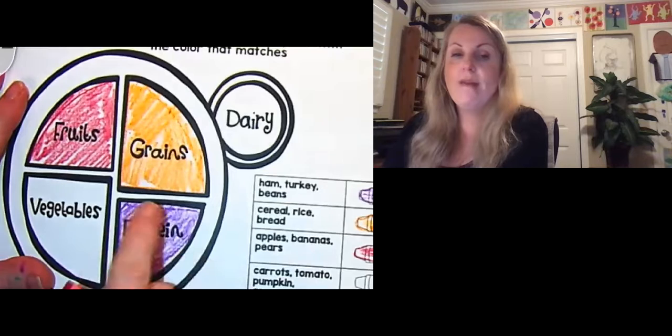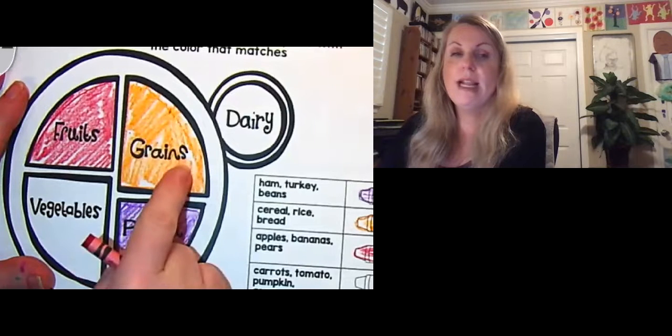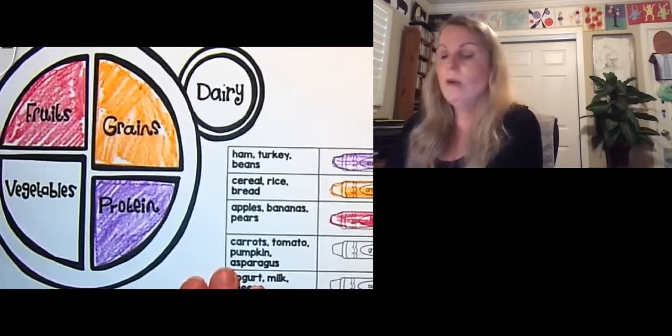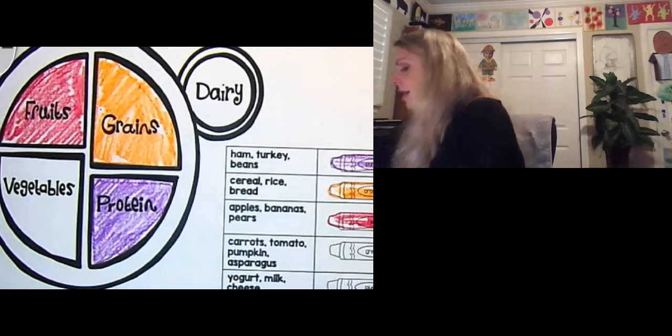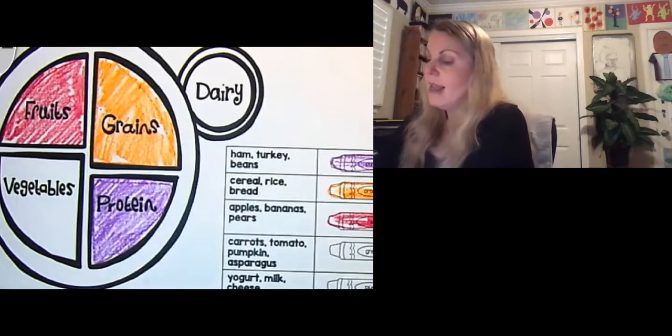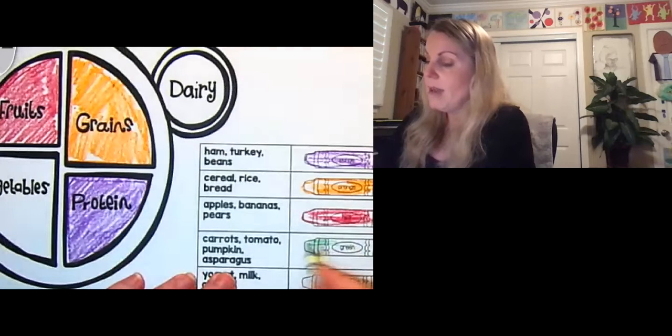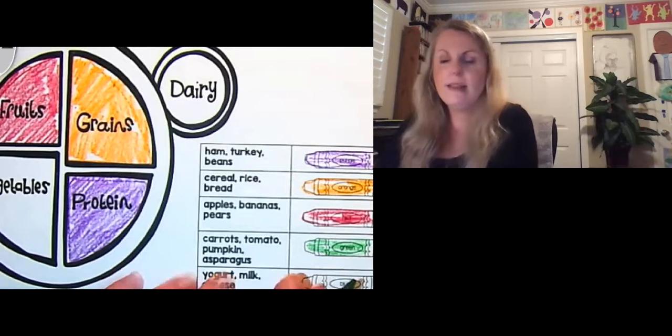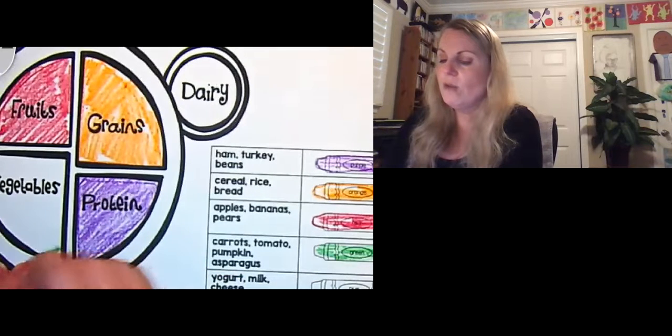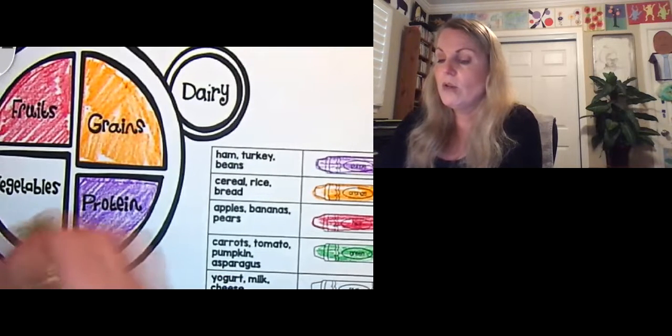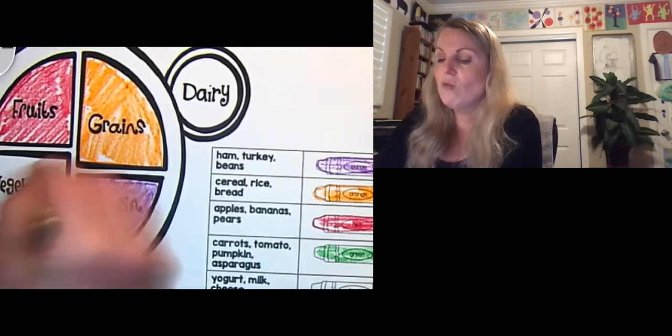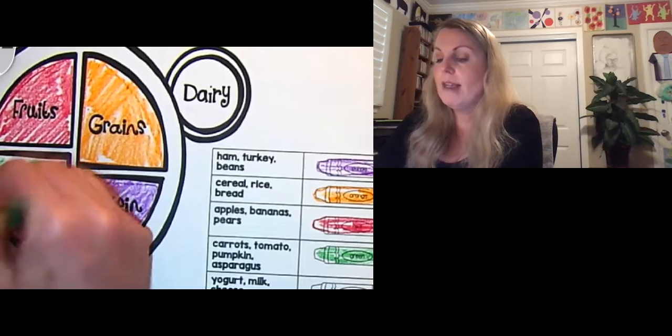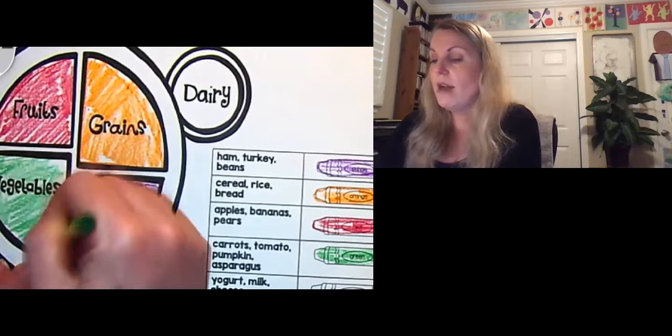When we're eating we should have that protein, we should have grains, and a little bit of fruit. Now our next one, we're gonna get out that green crayon. And the green crayon says carrots, tomatoes, pumpkins, and asparagus. Do you know what that is? Those are vegetables. So those are yummy. They keep our body strong, healthy. We should always have a nice portion of veggies.